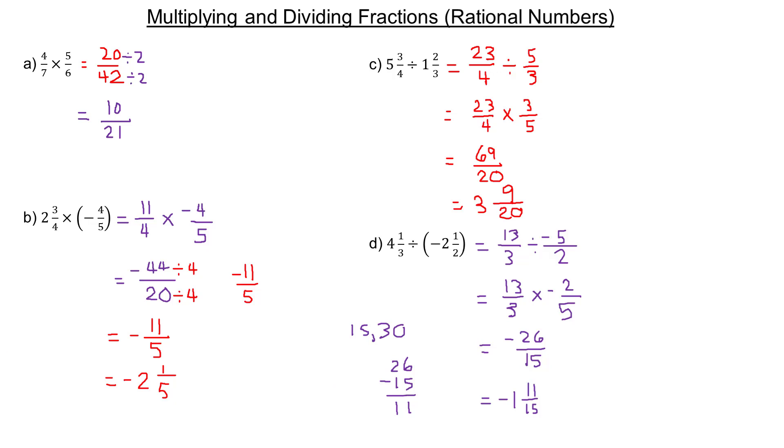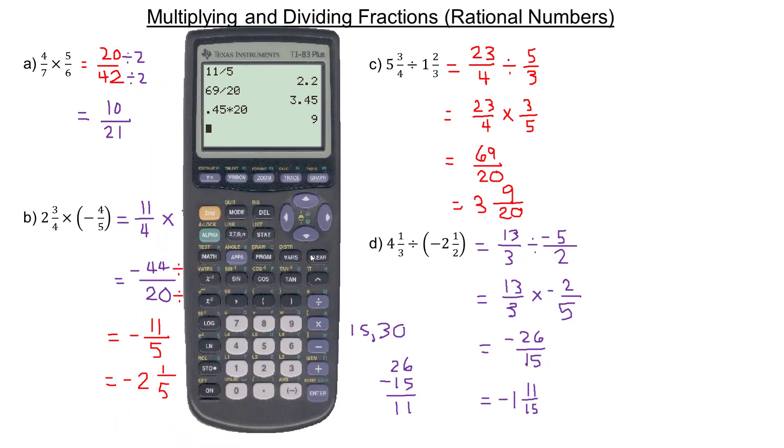I'll show you the calculator trick. 26 divided by 15 gives a decimal. If you take the decimal part and multiply it by the denominator, 15, you get the 11. That's another way to find what the numerator is.